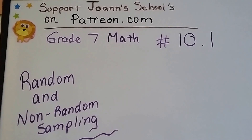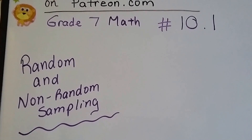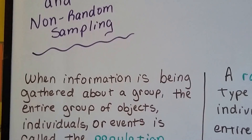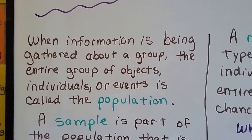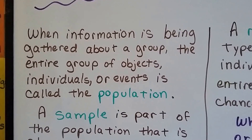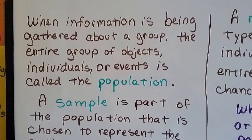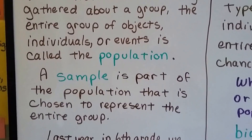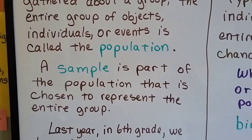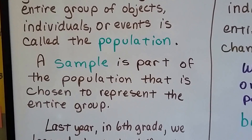Grade 7 math, number 10.1: Random and Non-Random Sampling. When information is being gathered about a group, the entire group of objects, individuals, or events is called the population. A sample is part of the population that is chosen to represent the entire group.